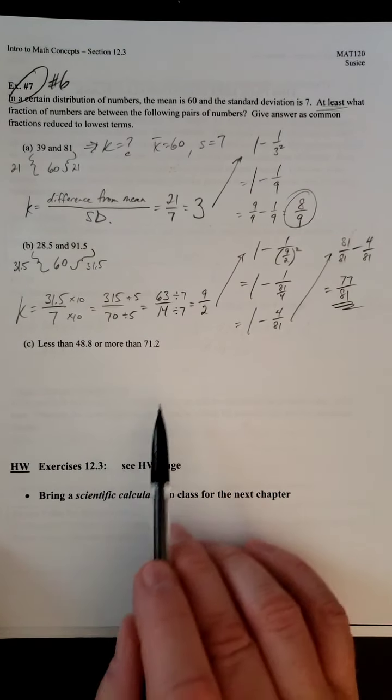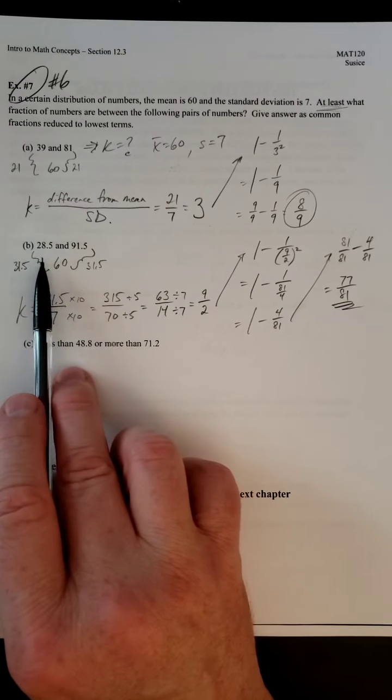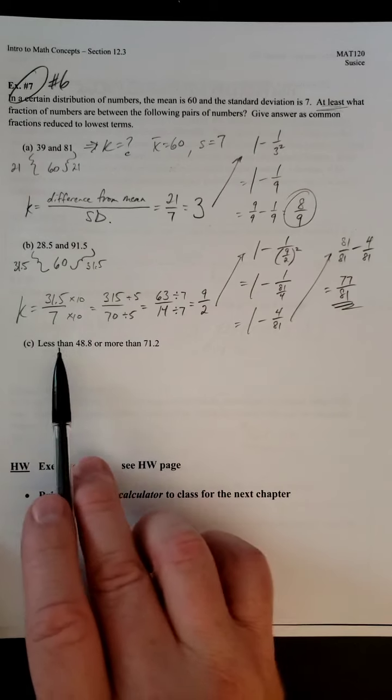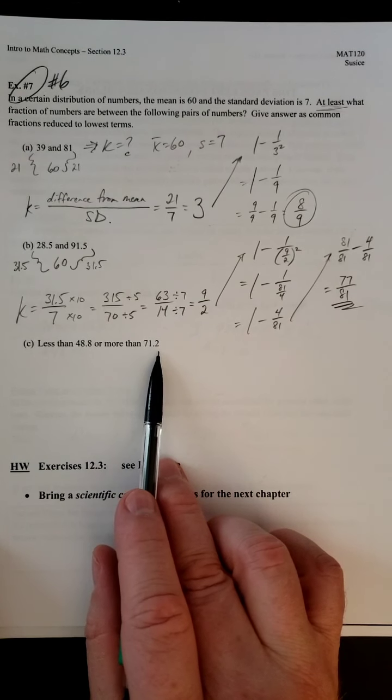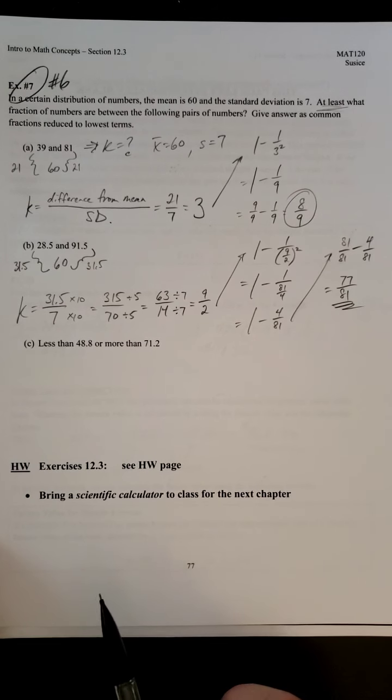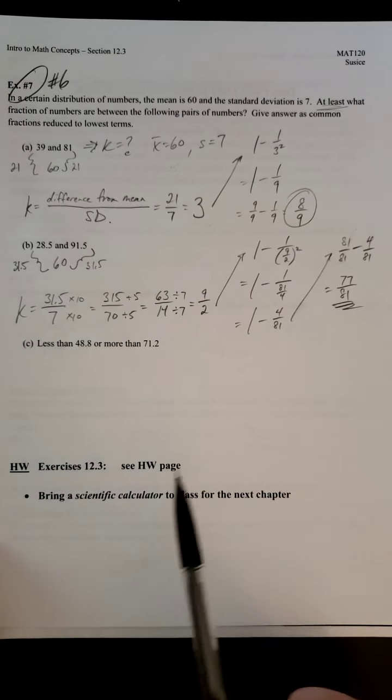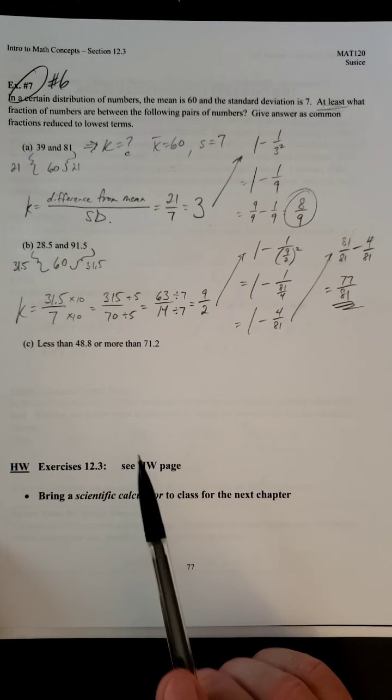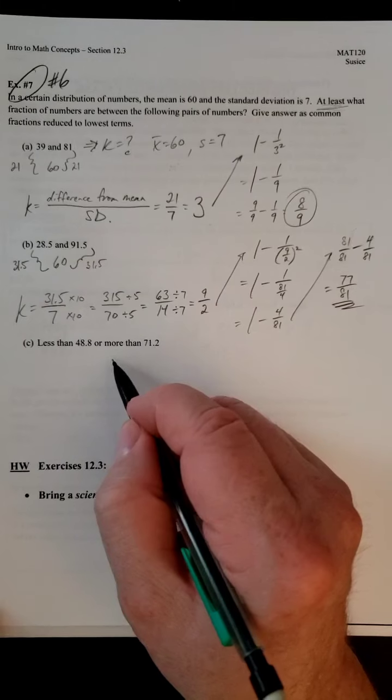But this last problem is a little bit different. Now they don't want what's in between those two. They want what's less than 48.8 or more than 71.2. This problem seems like it's totally different, but it's really not. We're still going to do exactly the same steps as we did in the other ones, but there's a subtle twist at the end.